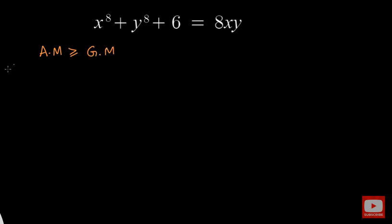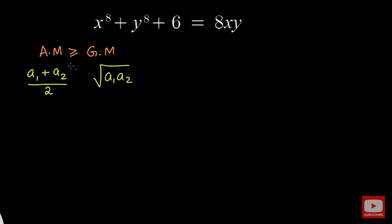Let us say we have two numbers a1 and a2. The arithmetic mean of these two numbers will be a1 plus a2 divided by 2, and the geometric mean will be the square root of a1 times a2. This inequality says that the arithmetic mean is always greater than or equal to the geometric mean, and the equality exists only when the numbers are equal to each other.